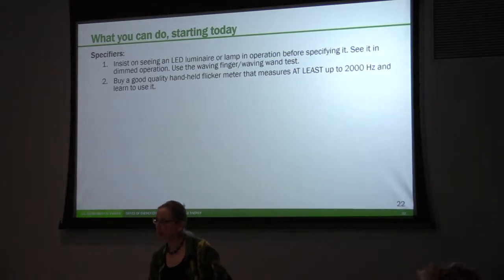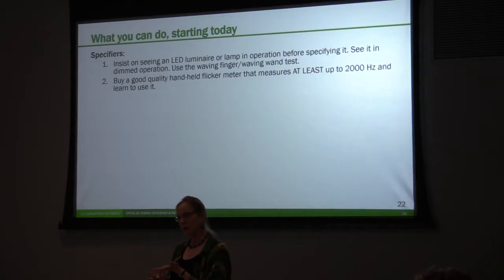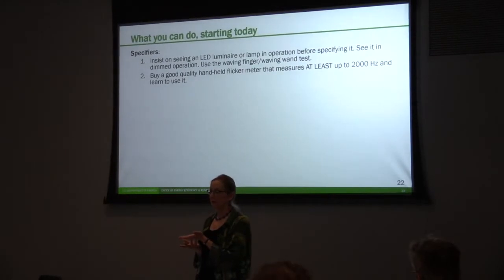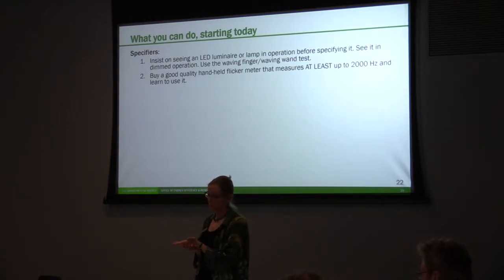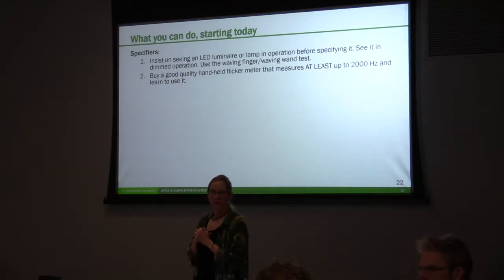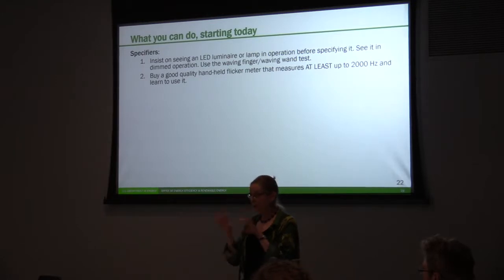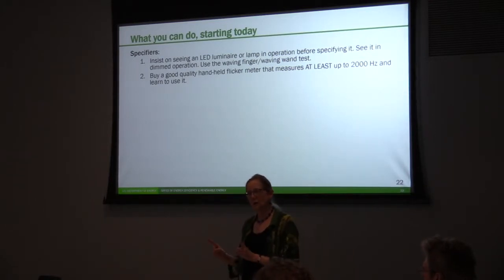You want to see the luminaire in dimmed operation from the various control devices because they will affect it differently. For example, if you're specifying 0-to-10-volt, make sure you're seeing it on a 0-to-10-volt dimmer. If you're specifying it with a phase cut dimmer, heaven help you. There are 0-to-10-volt dimmers with logarithmic dimming-to-output functions and some with linear — but hopefully that shouldn't affect the flicker of the LED.